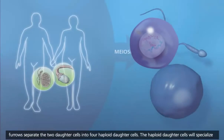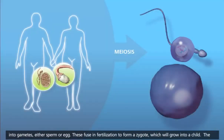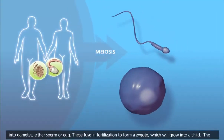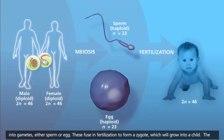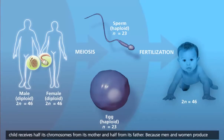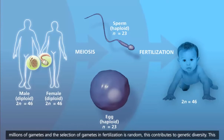The haploid daughter cells will specialize into gametes, either sperm or egg. These fuse in fertilization to form a zygote, which will grow into a child. The child receives half its chromosomes from its mother and half from its father. Because men and women produce millions of gametes, and the selection of gametes in fertilization is random, this contributes to genetic diversity.